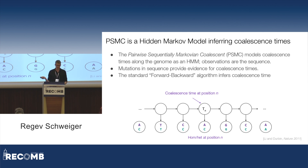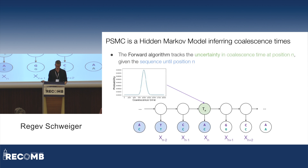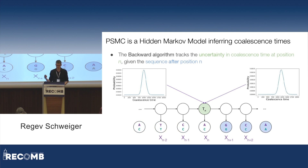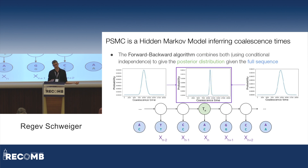The standard forward-backward algorithm is used to infer coalescence time. The forward algorithm goes from the beginning to the end of the genome, tracking uncertainty of coalescence time at position N conditional on the sequence up to that point. The backward algorithm does the same but conditional on all the sequence from that point forward. The forward-backward algorithm combines both passes to give a full posterior distribution of coalescence time at each position given the full sequence.